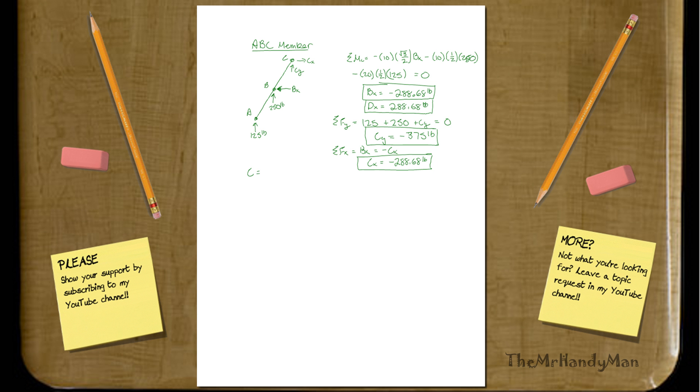Okay, so let's figure out what all the final variables are. The total force at C is going to be 288.68 squared plus 375 squared, and C will equal 473 pounds. So that's our reaction at C.